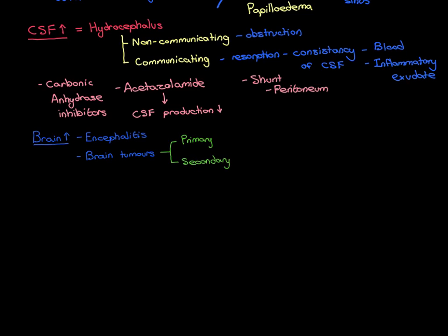A secondary brain tumour is a tumour that has arisen as a metastasis of a primary tumour elsewhere in the body. For example, you might have a gastrointestinal tumour. This tumour would be metastatic — meaning it is not a benign tumour, it is a malignant, cancerous tumour. The two defining features of a cancerous tumour are that it is invasive, invading surrounding tissue, and metastatic — meaning it throws off cells into the bloodstream that circulate to far-off portions of the body, leave the bloodstream there, and set up new tumours. These new tumours are called secondary tumours.